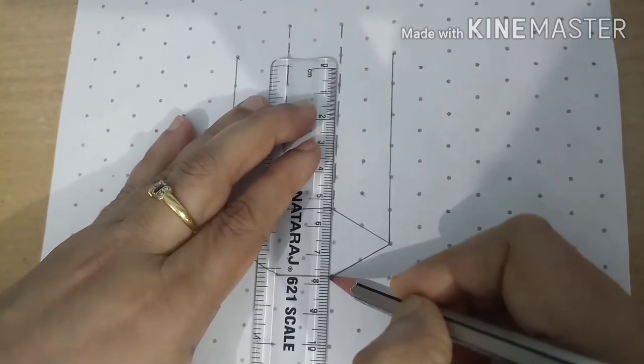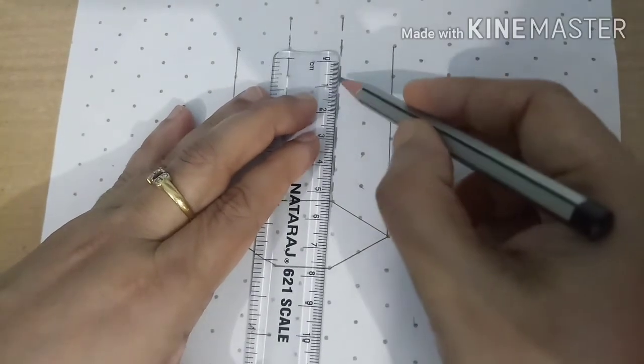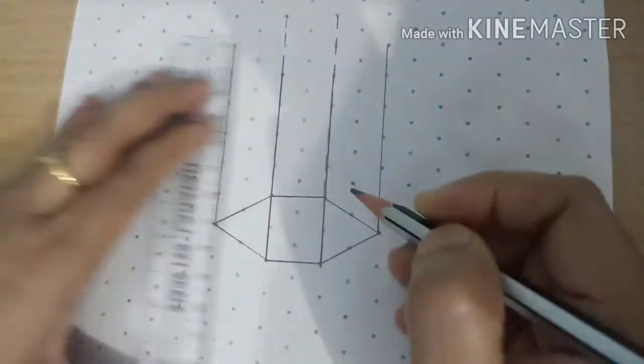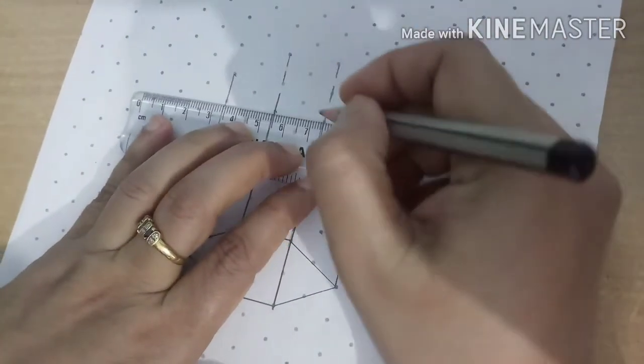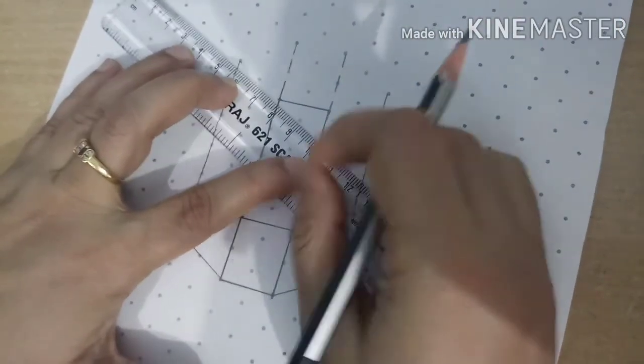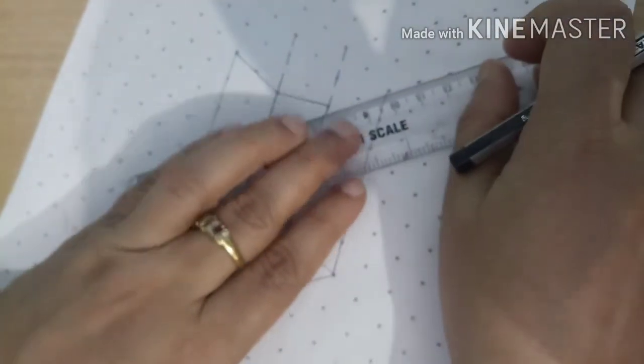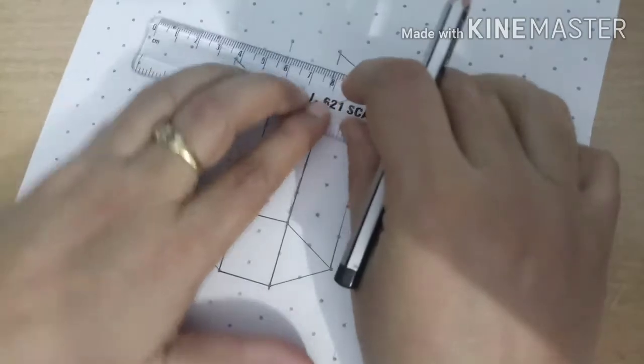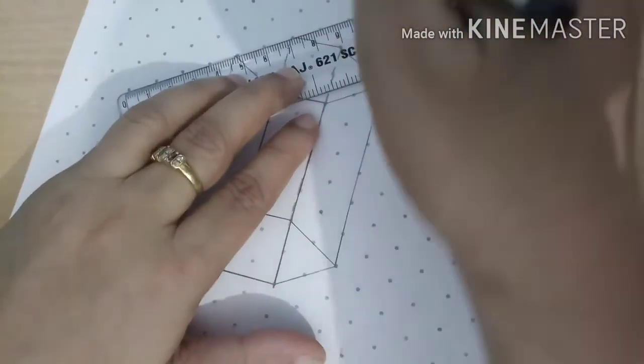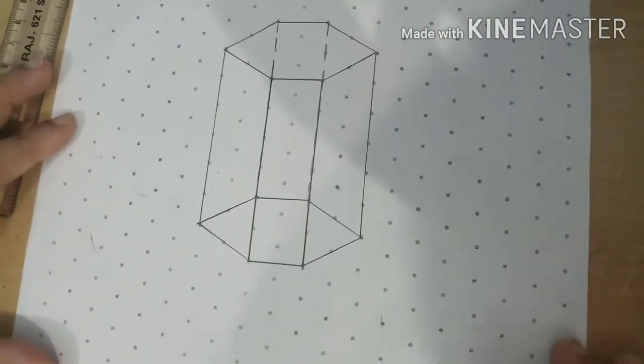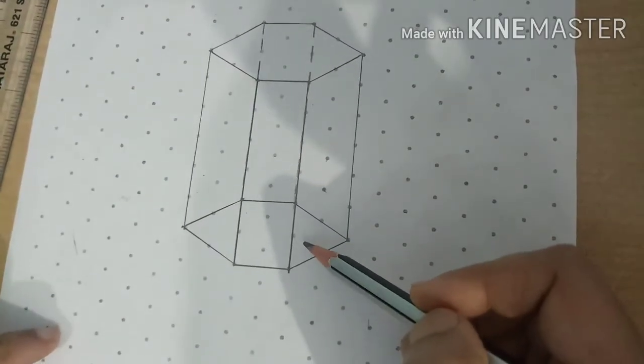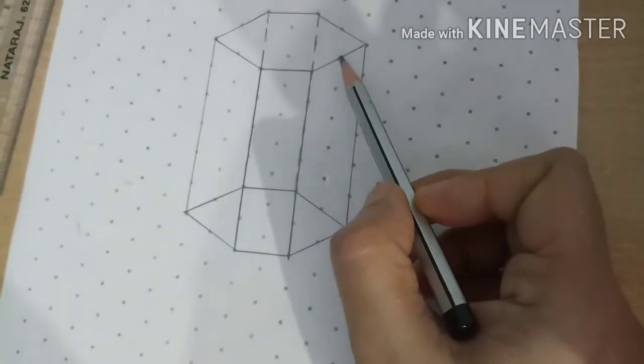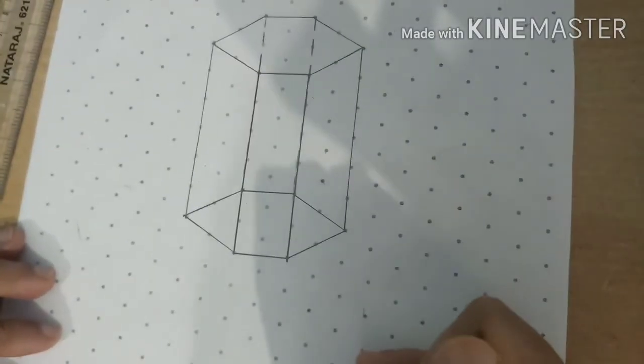Now, I will draw the equal lines from all the 6 faces. Now, I am going to join these points to make the top surface. Here, I am getting the top hexagonal. So, here it is hexagonal prism. The prism is a figure in which the bottom and the top faces are of the same shape like hexagon is at down and hexagon is at the top and having rectangles, parallel rectangles at its faces.